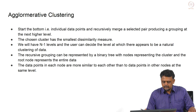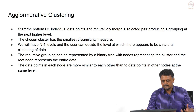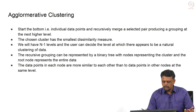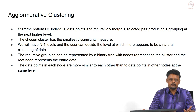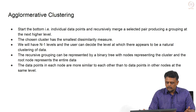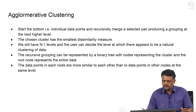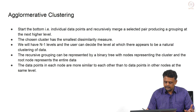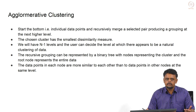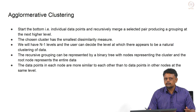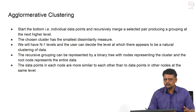To summarize agglomerative clustering: you start at the bottom with individual data points, treat each as a cluster, and recursively merge them pair at a time, producing a grouping at the next highest level. There will be N minus 1 levels. You merge a pair based on the smallest dissimilarity measure. The recursive grouping leads to a dendrogram — a binary tree where nodes represent clusters, the root node represents the entire dataset, and data points in each node are more similar to each other than to data points in other nodes at the same level.